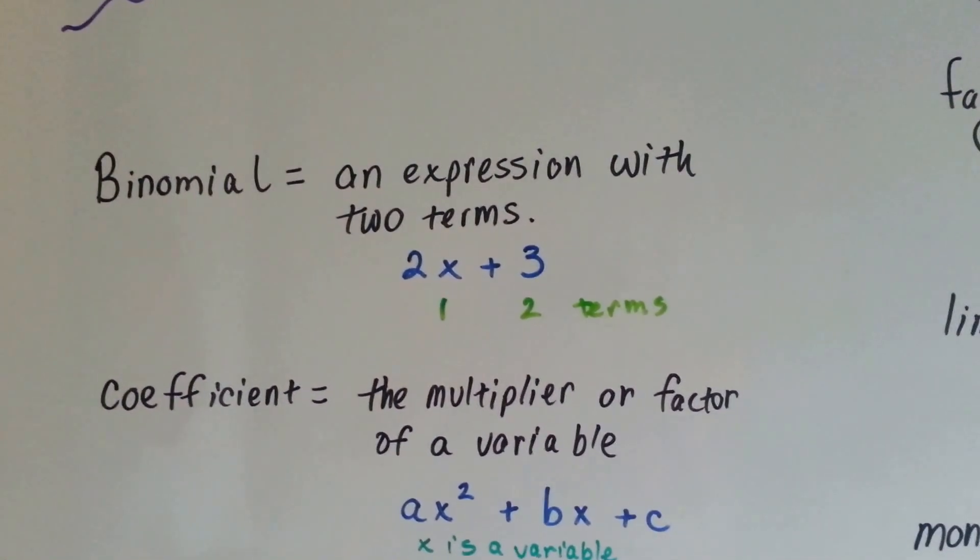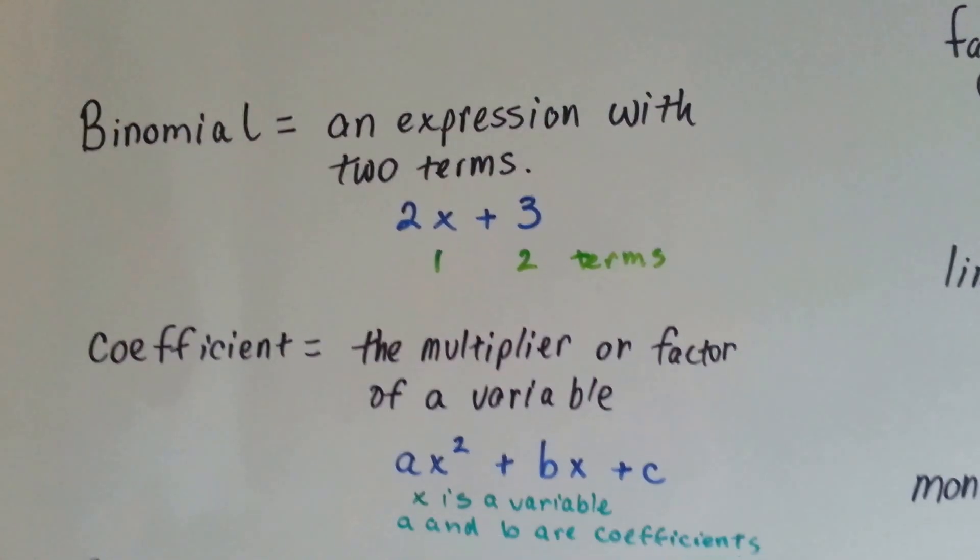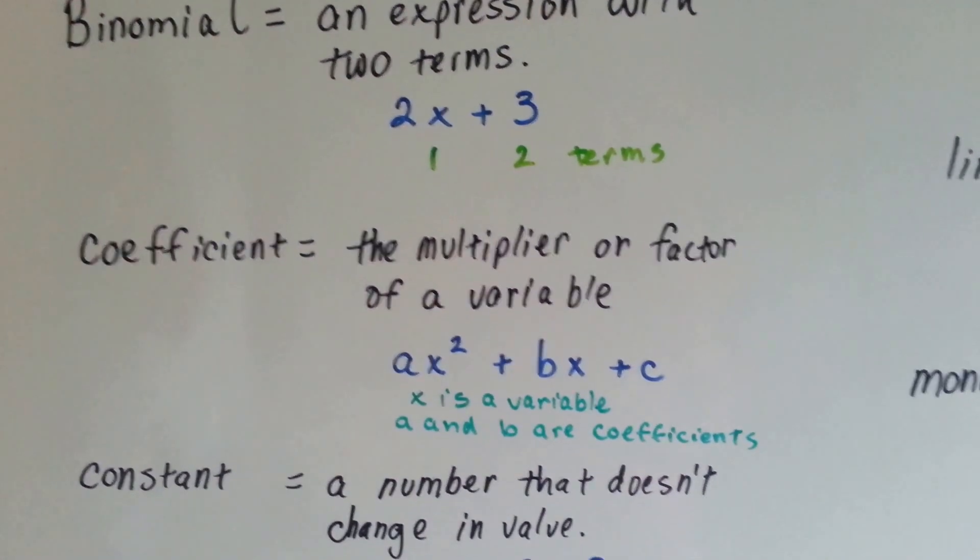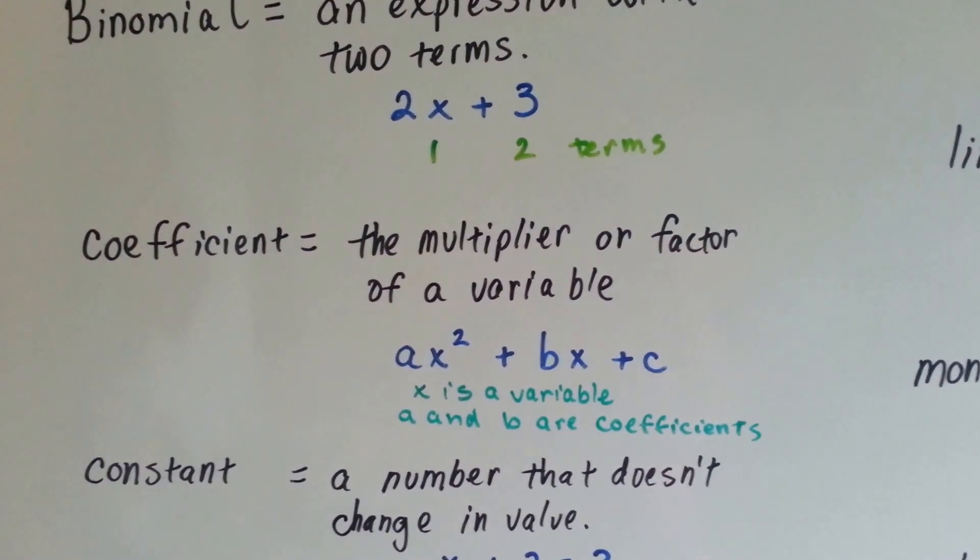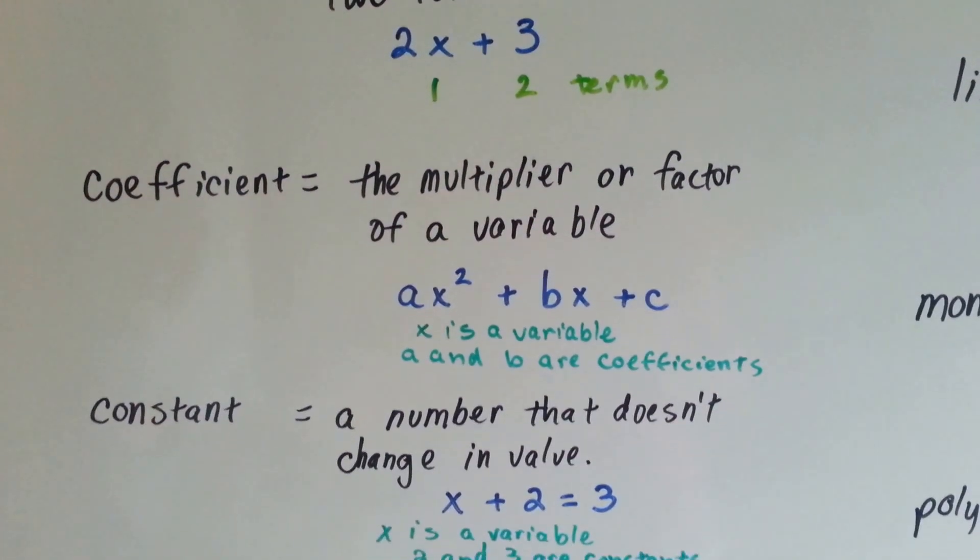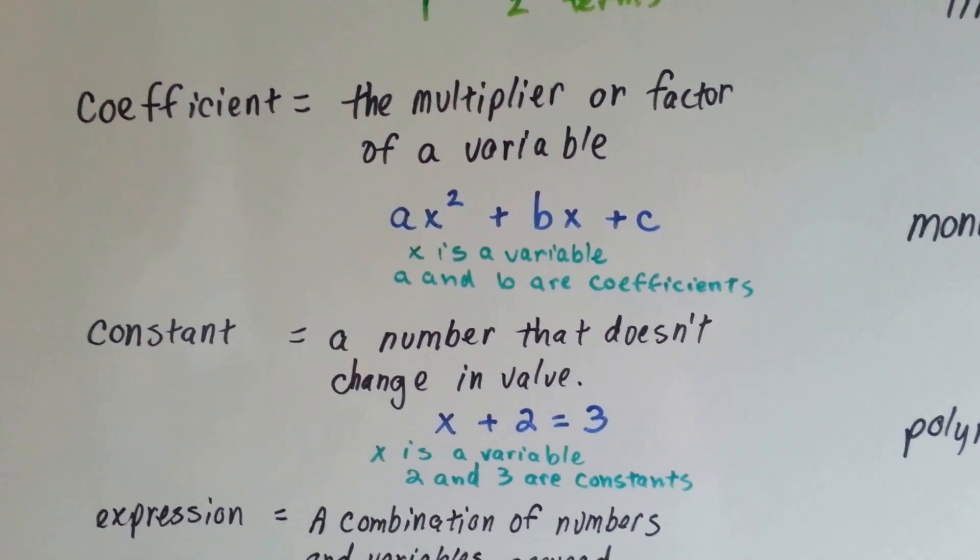A binomial, it's an expression with two terms like 2x plus 3. A coefficient, it's the multiplier or factor of a variable. A constant, that's a number that doesn't change in value.